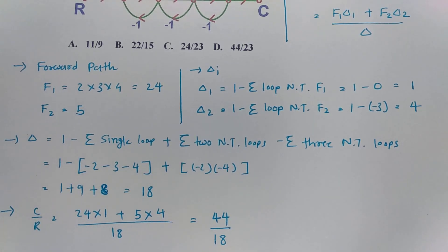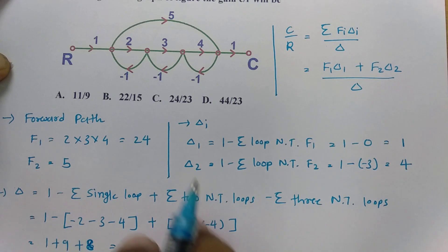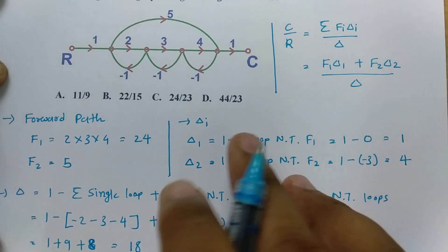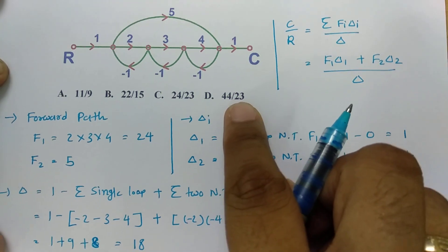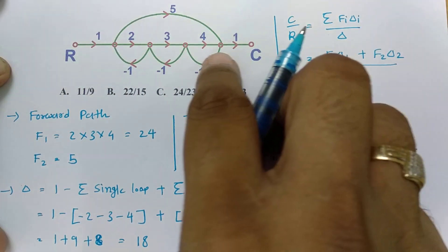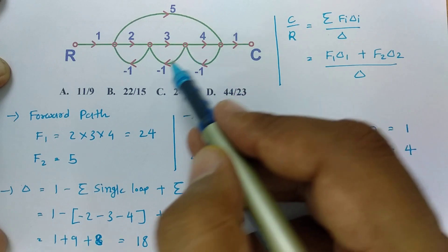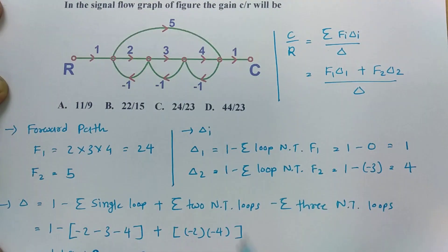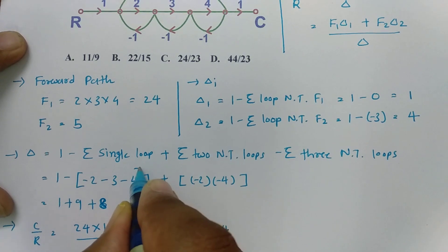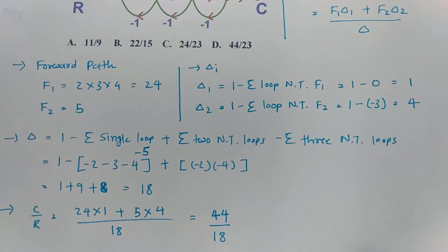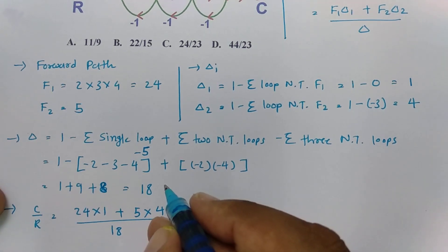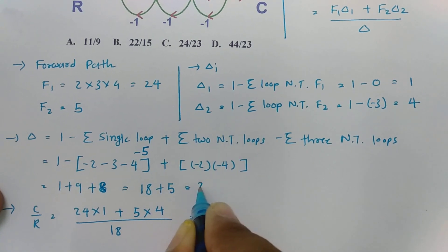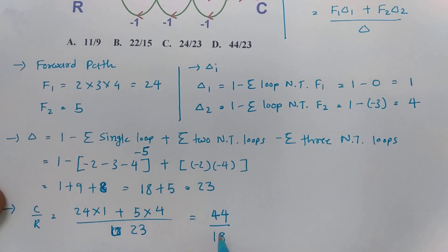I forgot one loop. There is one more loop: 5 into minus 1 equals minus 5, which I had missed. This is the kind of mistake students make in exams. I need to add minus 5 to the single loop summation. So instead of plus 9, it becomes plus 9 plus 5 equals plus 14, making delta equal to 1 plus 14 plus 8 equals 23. Therefore the final answer is C by R equals 44 divided by 23.